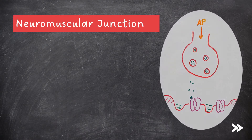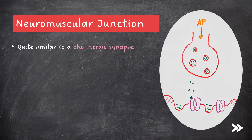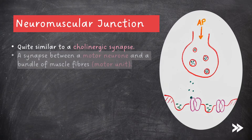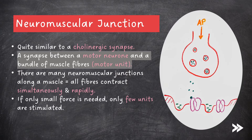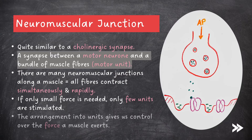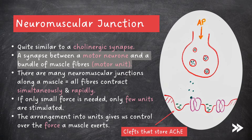Next we need to know the structure of a neuromuscular junction, which is quite similar to a cholinergic synapse. A neuromuscular junction is a synapse between a motor neuron and a bundle of muscle fibers, known as a motor unit. There are many neuromuscular junctions along a muscle, meaning that all fibers contract simultaneously and rapidly. If only a small force is needed, only a few units are stimulated, so the arrangement into units allows more control over the force a muscle exerts. Note that at neuromuscular junctions, the post-synaptic membrane is folded into lots of clefts that store the enzyme acetylcholinesterase.